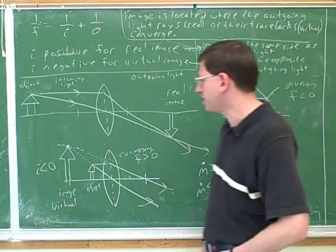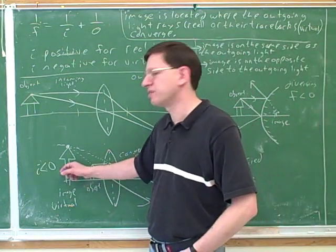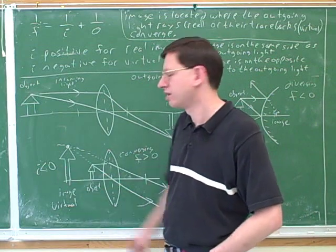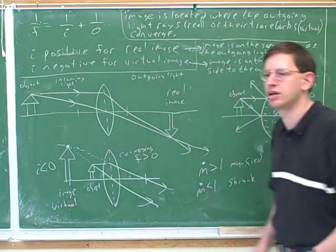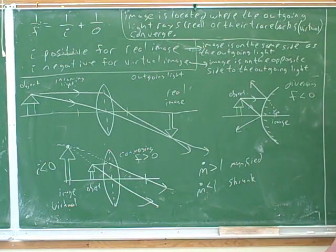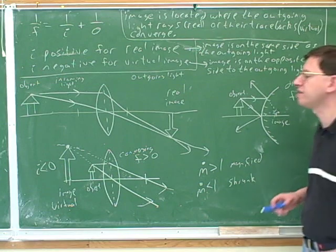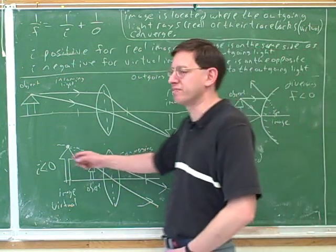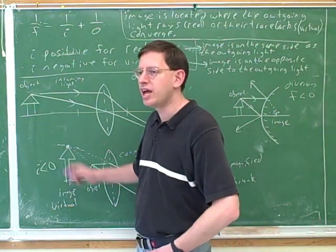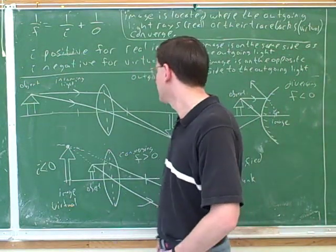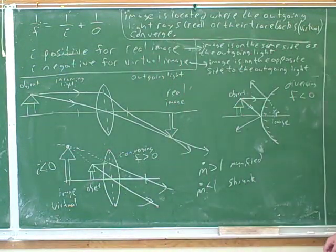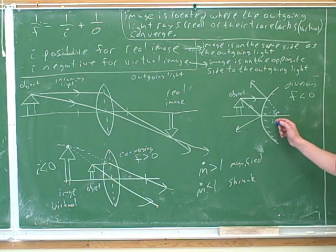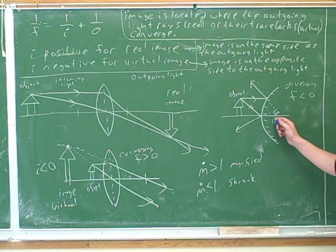Going back to this picture, what can you tell me about M? The magnitude of M is greater than 1. And what can we say about M over here? The magnitude is less than 1 — so the image is shrunk.